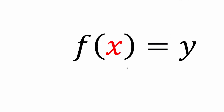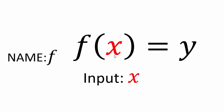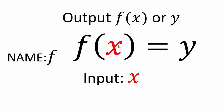Let's recall: when you write f of x equals y, f is the name of the function, x is the input, and f of x, or y, is the output.